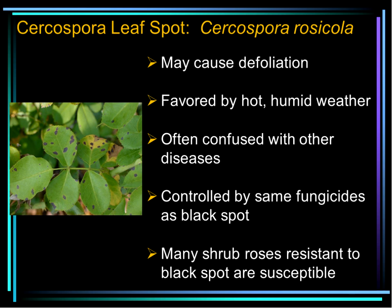A disease we're finding to be rampant, especially on shrub roses in mid-summer, is Cercospora leaf spot. It can cause leaves to turn yellow and defoliate just like black spot, and is favored by hot, humid weather. It's controlled by the same fungicides used for black spot. Importantly, many shrub roses resistant to black spot are very susceptible to Cercospora leaf spot. The handout roses were screened for this disease as well as black spot. 'Carefree Sunshine' is moderately resistant but may spot up in very hot summers, though it will retain its foliage and bloom fine.